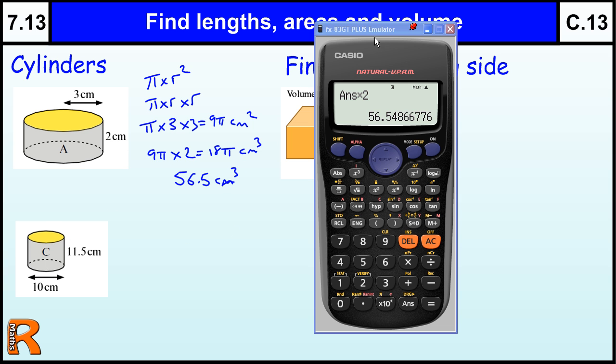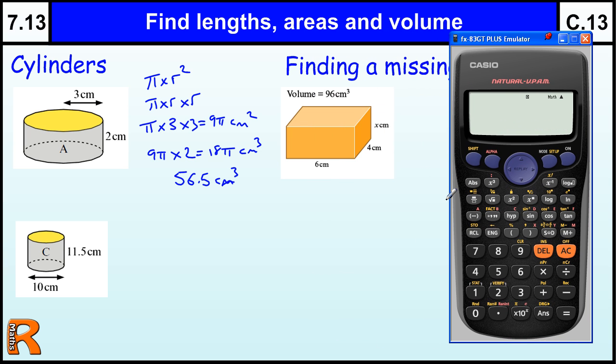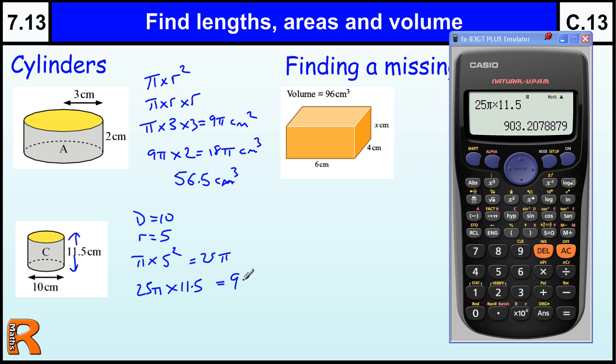A slightly trickier one, because we've given the diameter. So to start with, if the diameter is 10, then we need to realize that the radius is half of that, which is 5. And then we continue in the same way as we did before. So we've got pi times 5 squared, which is 25 pi. And then we've got to times by this 11.5, which is the height. So we've got 25 pi times by 11.5. Which is that value there. Or 903.2 centimeters cubed.